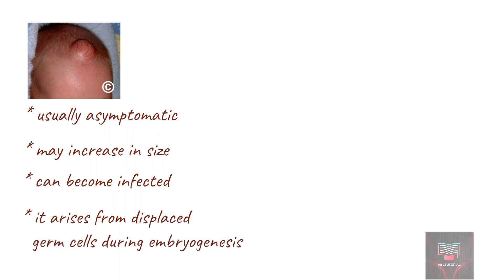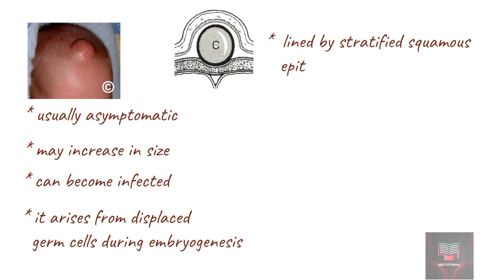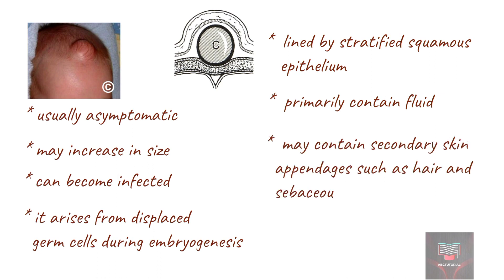Anterior fontanel inclusion cysts develop from germ cells displaced between the third and fifth week of embryogenesis. These cysts are lined by stratified squamous epithelium and their contents are primarily fluid. In the majority of cases, some secondary skin appendages such as hair and sebaceous glands are present. Thus, they represent dermoids.